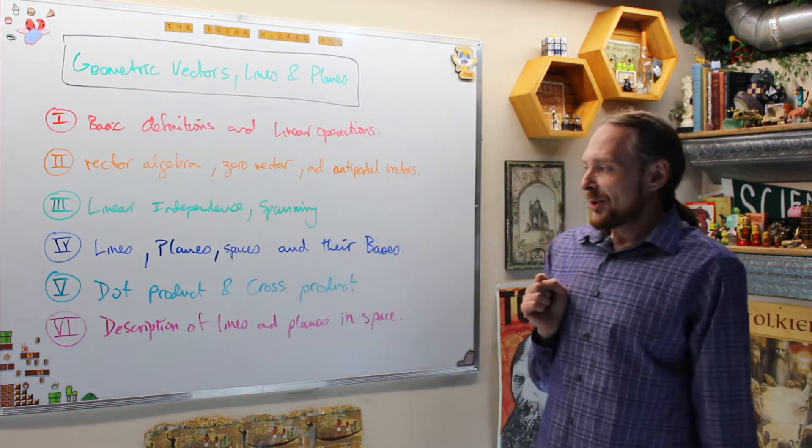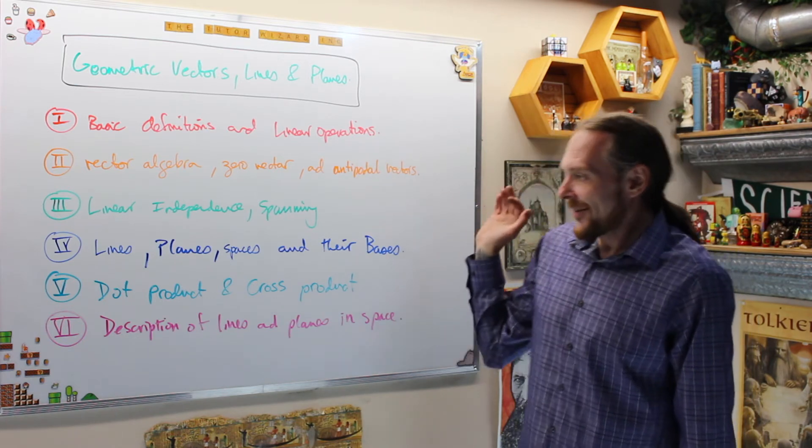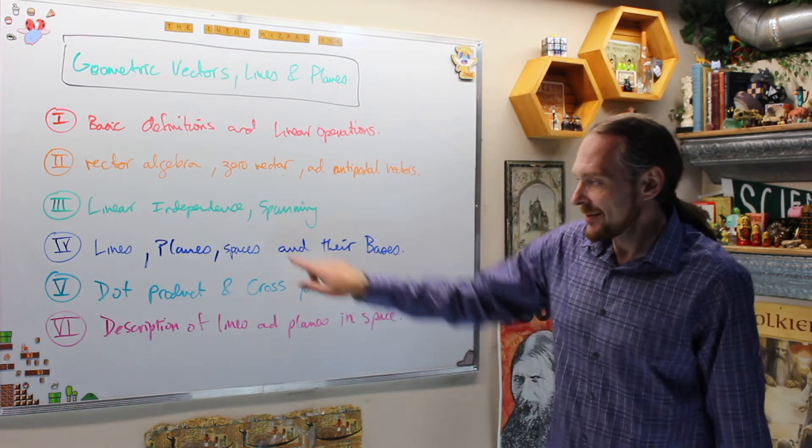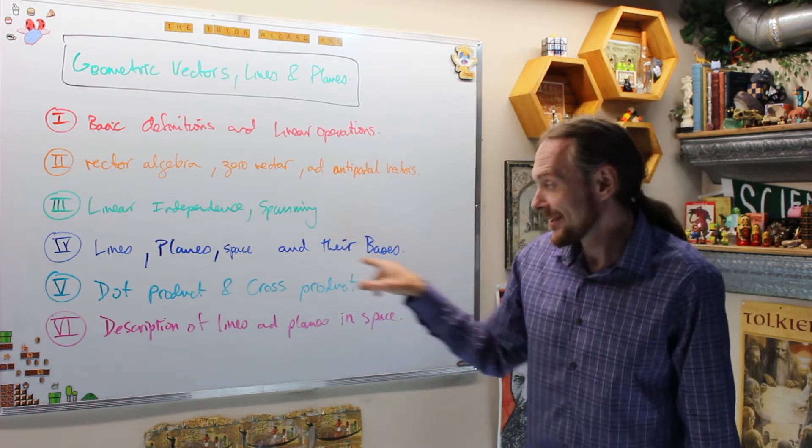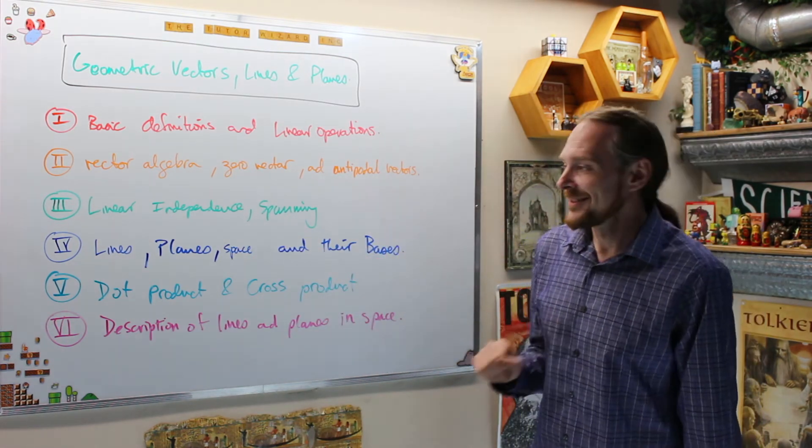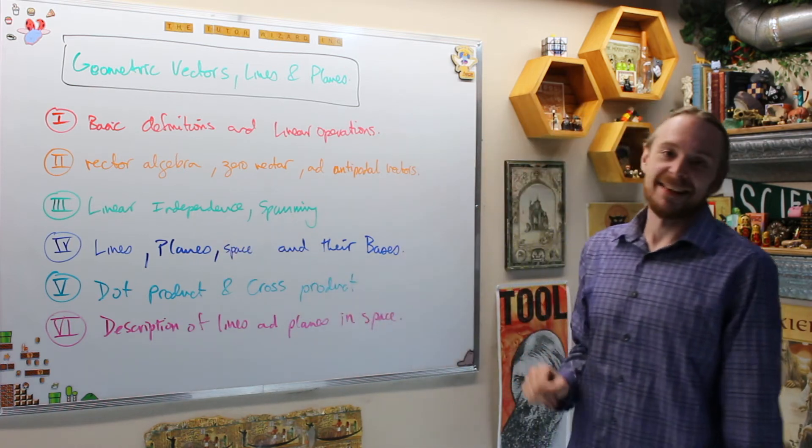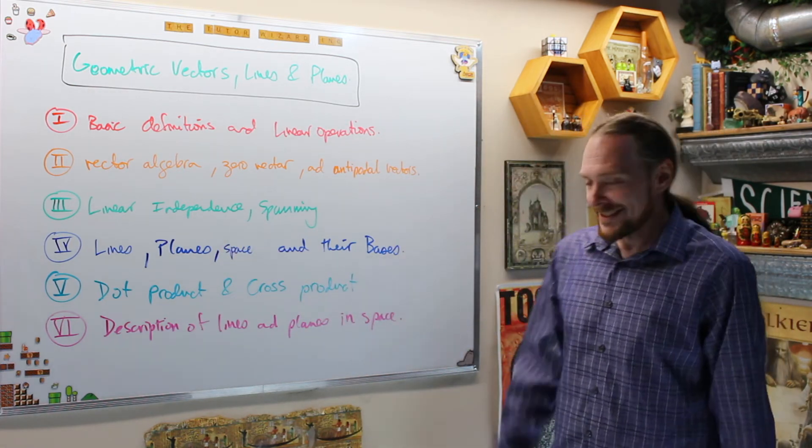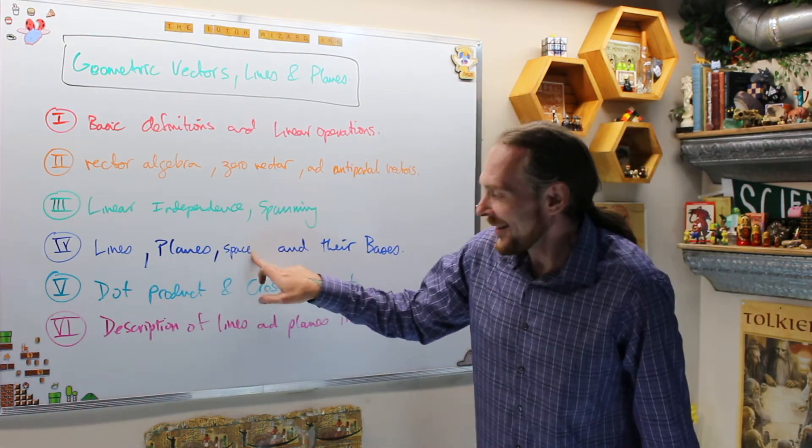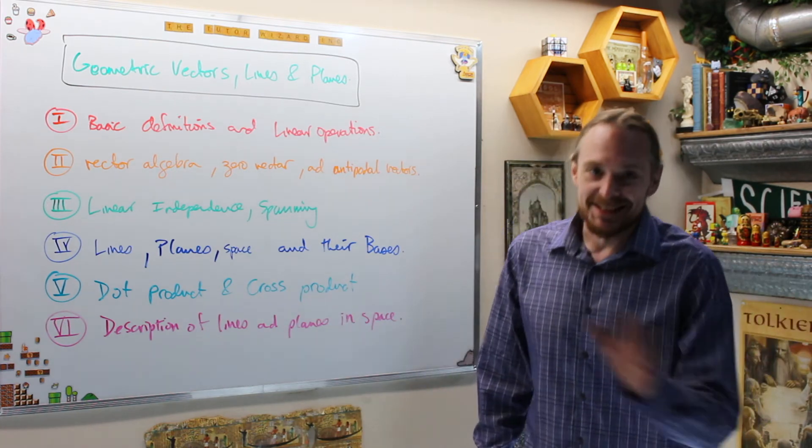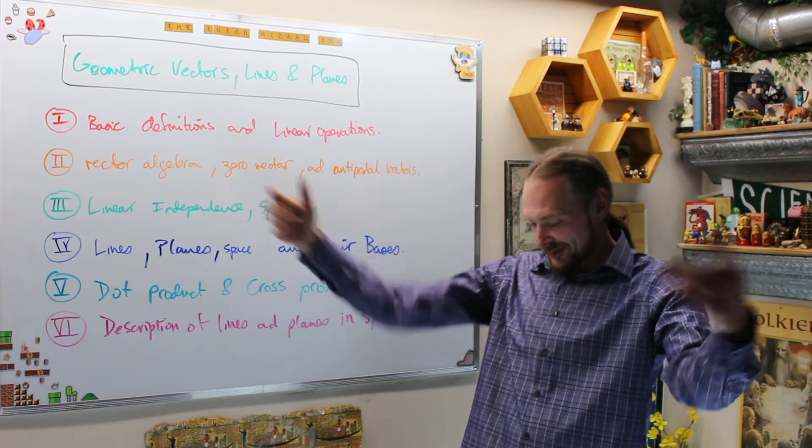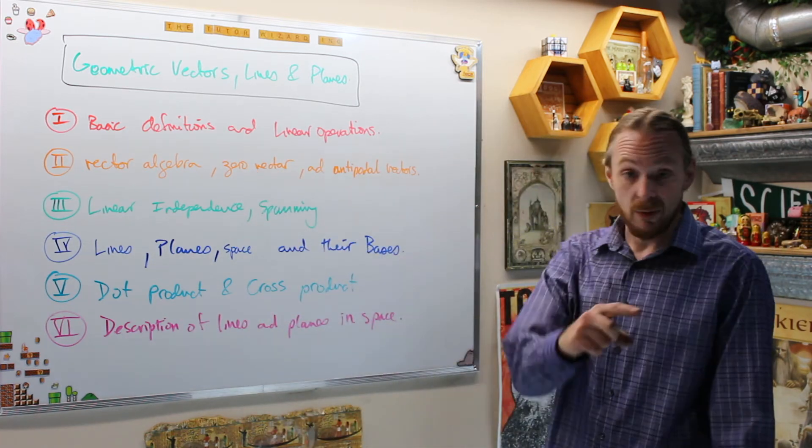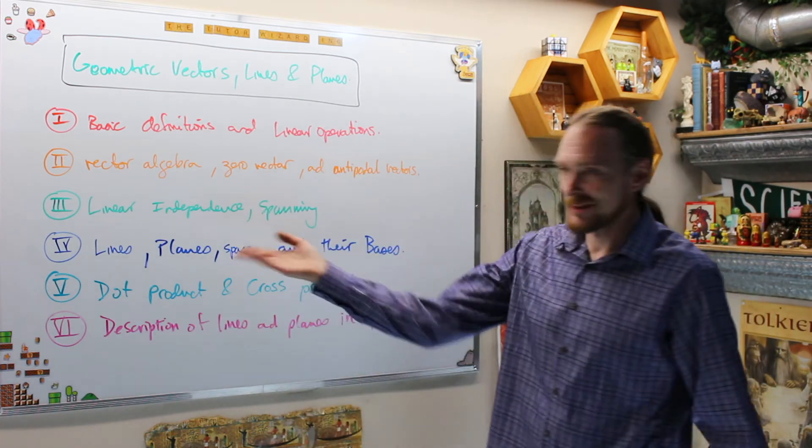And then we will do the description of lines and planes and spaces. Space. Spaces. He just wanted it to rhyme spaces and their bases. It doesn't rhyme anyways. It's lines, planes and space and their bases. This is the plural of bases as bases. Anyways, one three dimensional construct is hard enough to describe. Let's work on one of them. And then, yes, if we can think of a four dimensional construct, there's infinite many copies of three space and four space. But we'll get to that after we describe them.